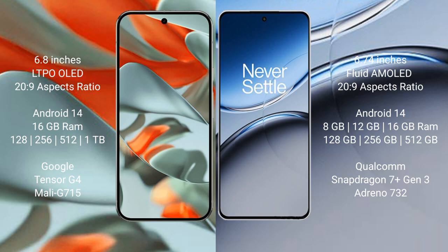OnePlus Nord 4 comes with 8GB, 12GB, or 16GB RAM and 128GB to 256GB, up to 512GB internal storage. It is powered by the Qualcomm Snapdragon 7 Gen 3 processor with Adreno 735 GPU.